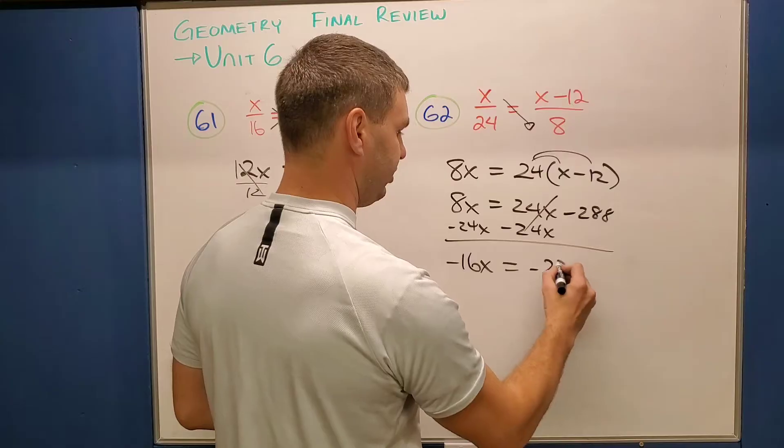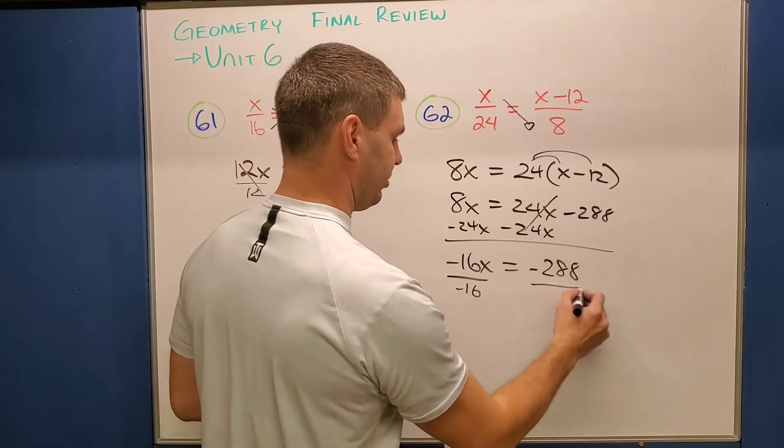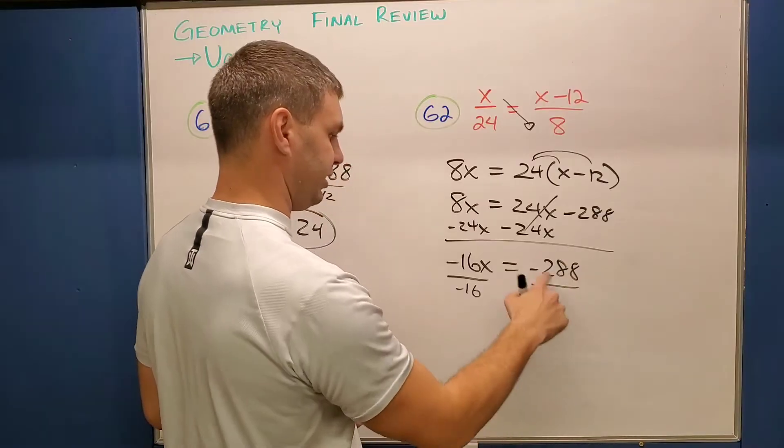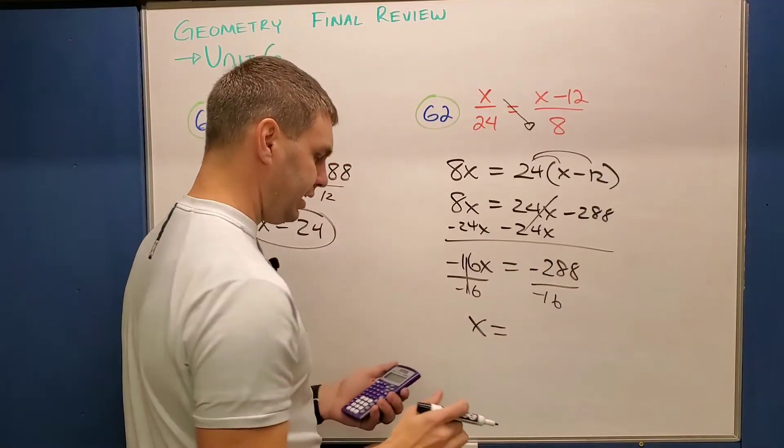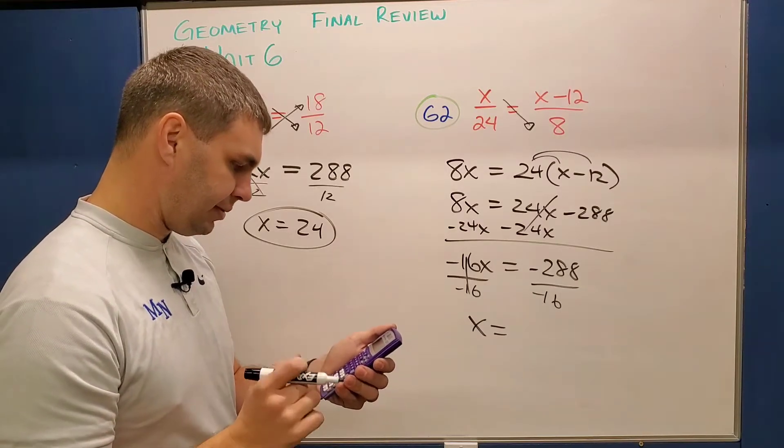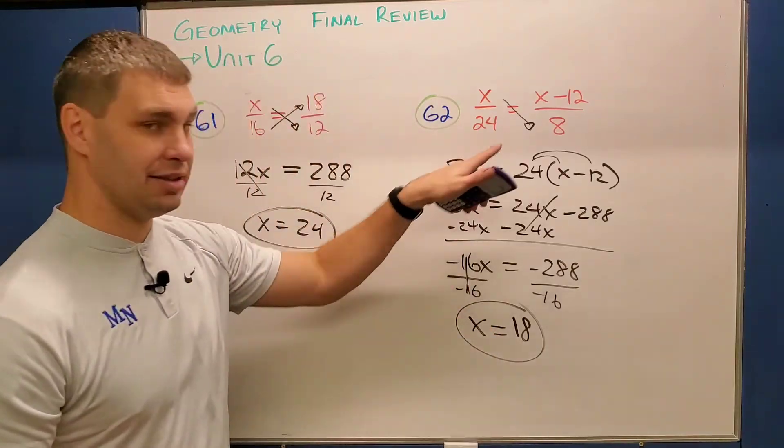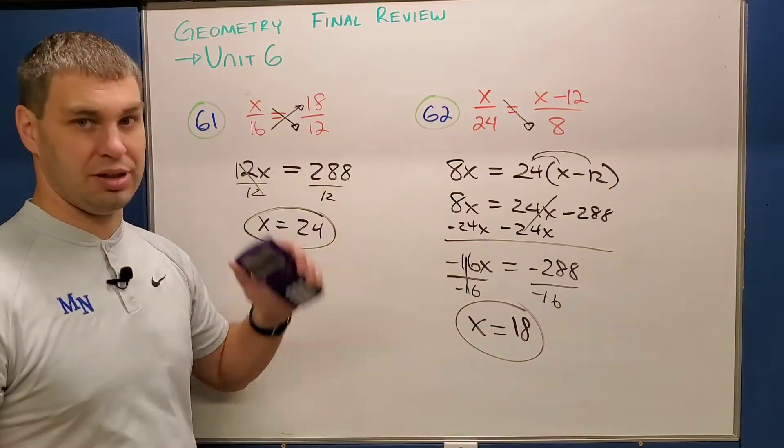So this is going to equal something positive since I'm dividing both sides by 16 and they're both, or negative 16 and they're both negative. This gives me x equals negative 288 divided by 16 is 18. So x equals 18 in this problem and 24 in that one.